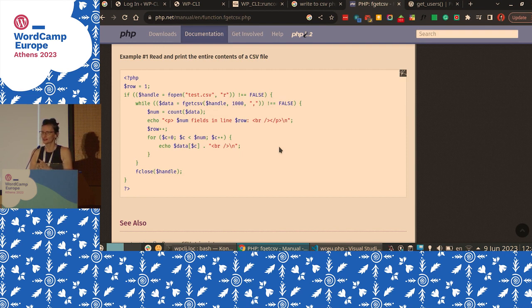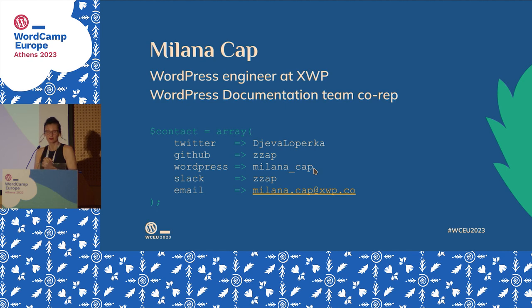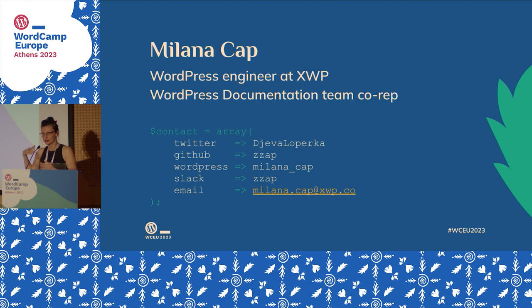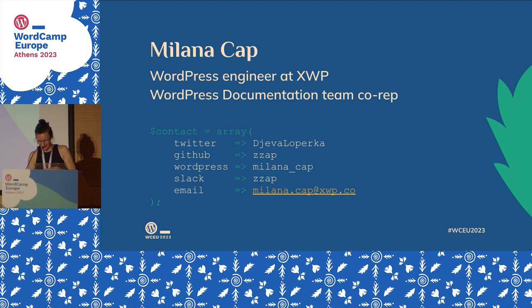There are a lot more things but we don't have enough time. My name is Milana Tsap. I am a WordPress engineer at XWP and the loudest member of the documentation team. You can find me on these places. I'm also a classical musician, so if you want to talk about that, that's fine. You can find me here in the hall — I'll be here for two days for any questions, discussions, or proposals. If you have a hosting or a server you want broken, I'm there. Thank you so much for your time.